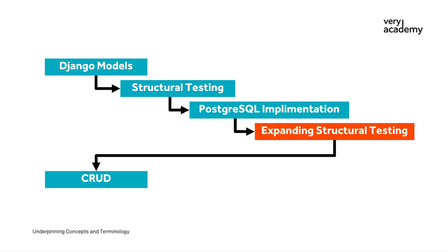In this module, we simply delve deeper into the four pillars that we have already introduced: Django models, structural testing, the PostgreSQL database, and Docker.